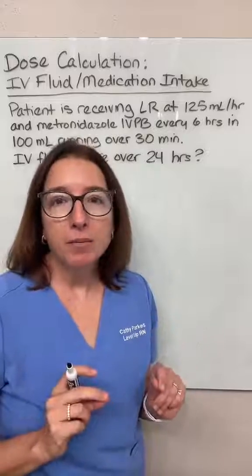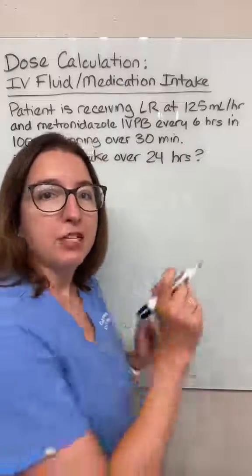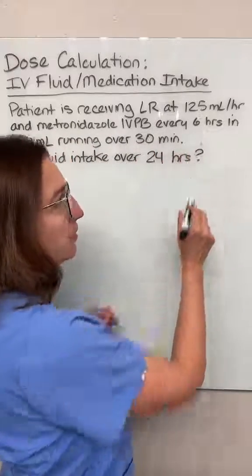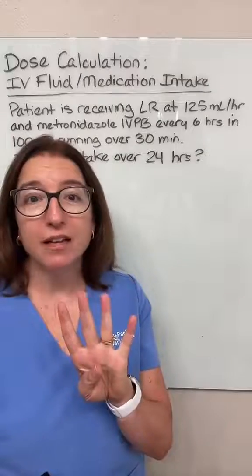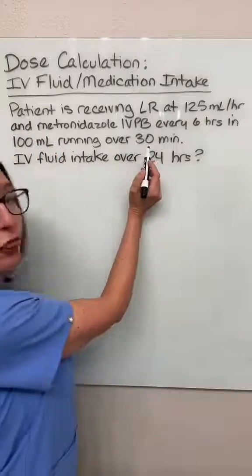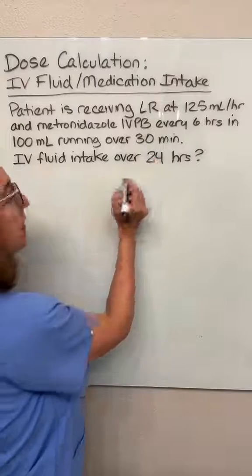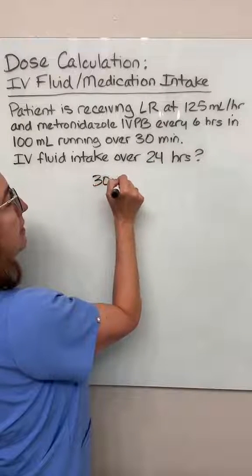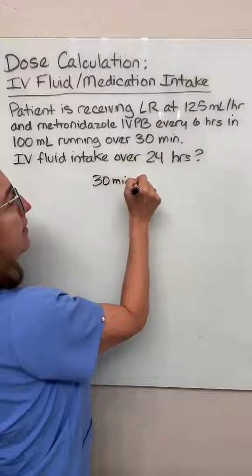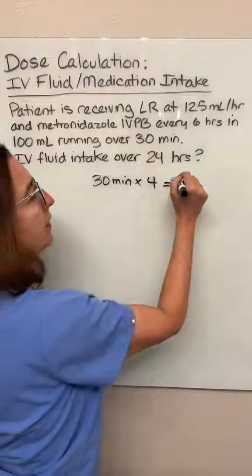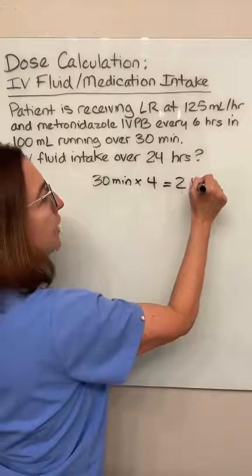Per our problem statement, our patient is getting their IV piggyback every six hours, which means they're getting it four times a day. Each time it runs, it runs over 30 minutes. So 30 minutes times four times within a 24-hour period equals two hours.